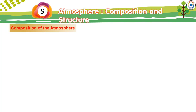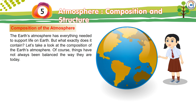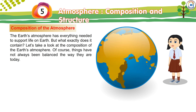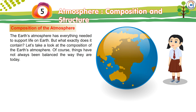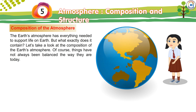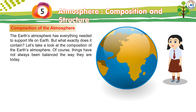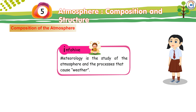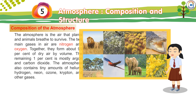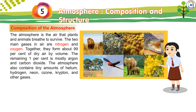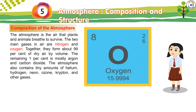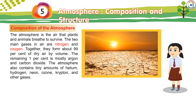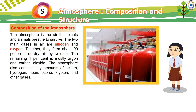The Earth's atmosphere has everything needed to support life on Earth. InfoHive: Meteorology is the study of atmosphere and the processes that cause weather. The atmosphere is the air that plants and animals breathe to survive. The two main gases in air are nitrogen and oxygen. Together, they form about 99% of dry air by volume. The remaining 1% is mostly argon and carbon dioxide.